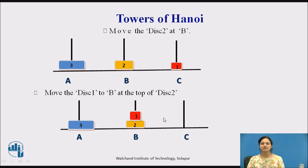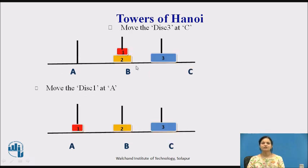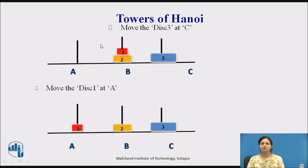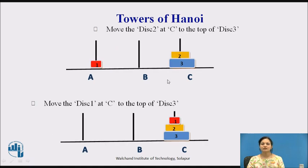Then disk 3 is moved to C. Then disk 1 is moved to A, disk 2 is moved to C, and finally disk 1 is placed on top at C. So these steps have to be followed. Now, once we have moved the nth disk to the destination, we need to move the remaining n minus 1 disks to the final destination recursively.